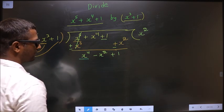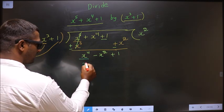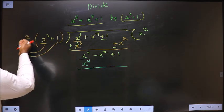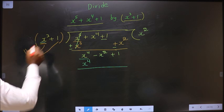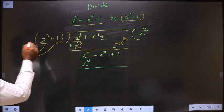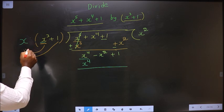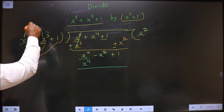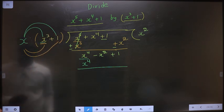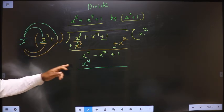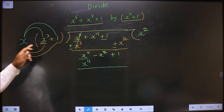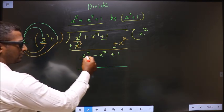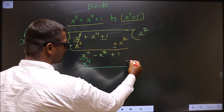Here it is x power 4. Below this, we should also get x power 4. Here it is x cube. To get x power 4, this should be multiplied with x. When you are multiplying to this, you should also multiply to the other term. So x into x cube is x power 4, and x into 1 is x. Here I do not have x term, so I write it separately.